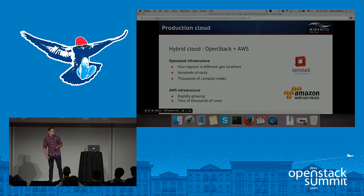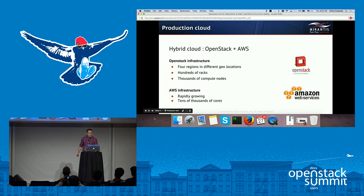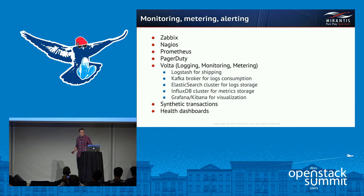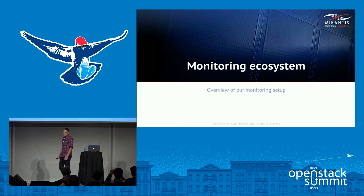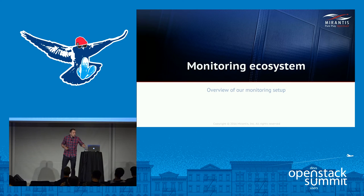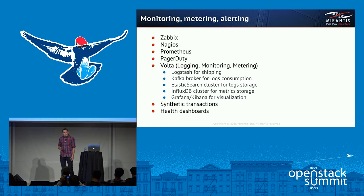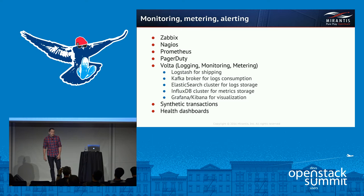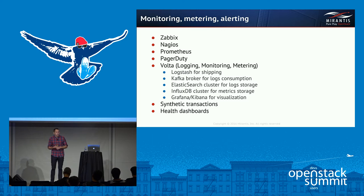Monitoring is the essential part of every environment. We have a bunch of monitoring tools and we are struggling with wiring them all together. Our main monitoring tool is Zabbix. We also have things like Prometheus, some legacy Nagios installations, and we use PagerDuty for pages. Volta is our log monitoring and metering platform — under the hood it's just Logstash, Kafka, Elasticsearch, Grafana, and Kibana.